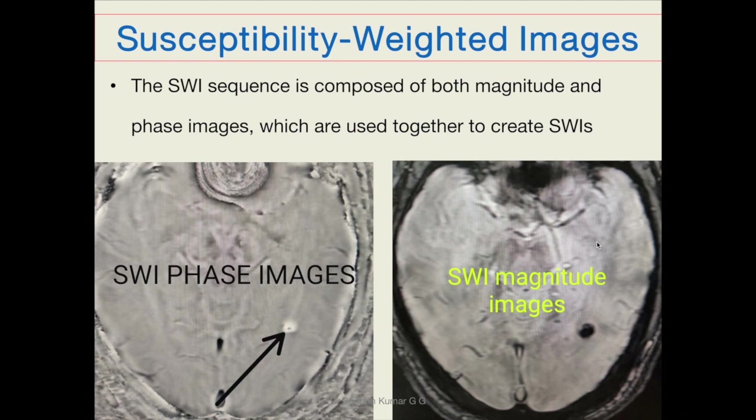Hello everyone. We shall discuss Susceptibility-Weighted Imaging. The Susceptibility-Weighted Imaging sequence is composed of both magnitude and phase images. This is a phase image and this is a magnitude image.